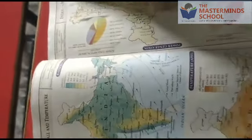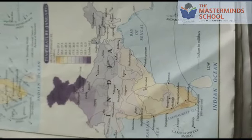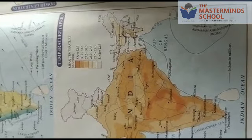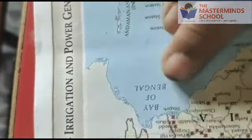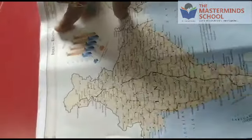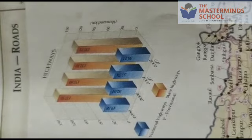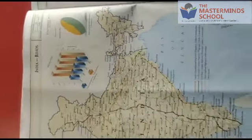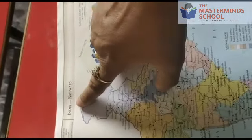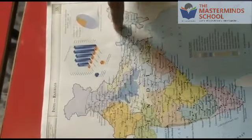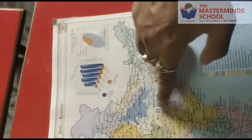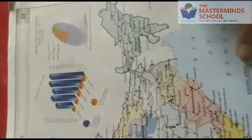Here is one more map. From this we can know about irrigation and power generation in India, and many different types. Here is a road map — we can find out the roads and from where to where they go. Next is the railways map for India, showing wherever the railway stations are and where all the tracks go from one place to another.